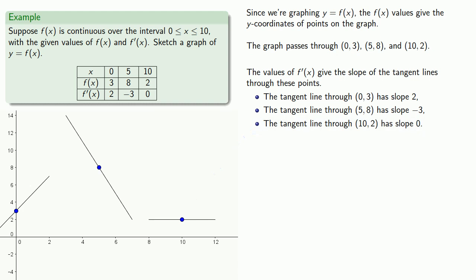And because f of x is continuous, we know that somehow these segments will join up. Since we've used up all of the information that we have available, at this point we just want to make sure that these sections of the curve join up. And so we might join them up something like this.